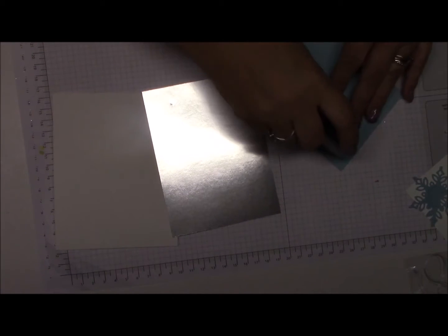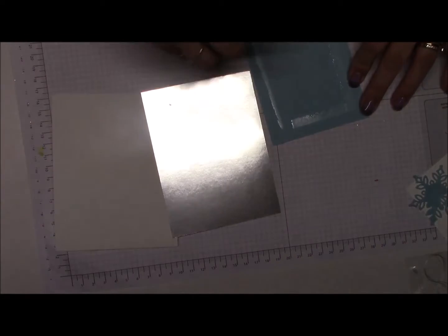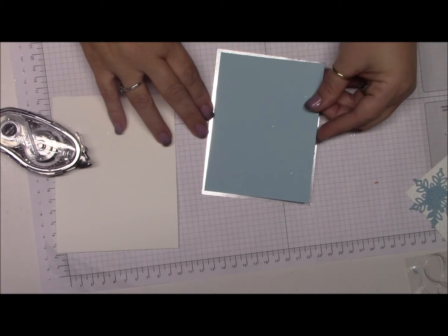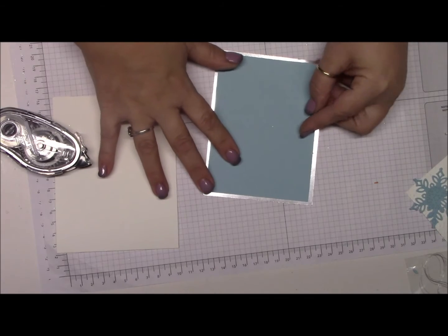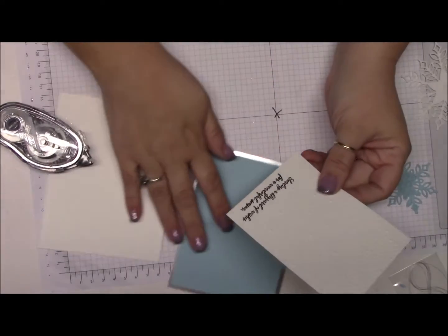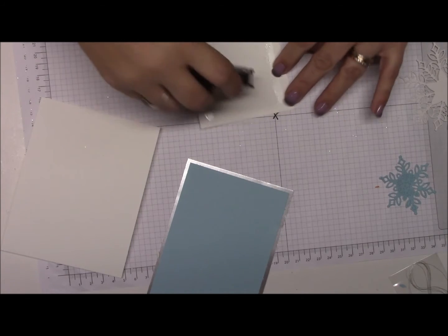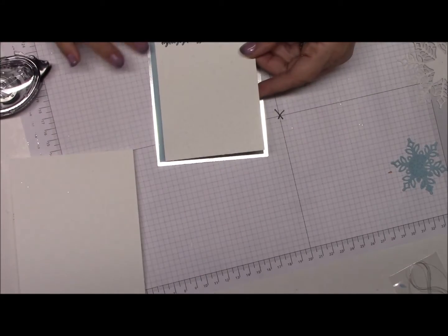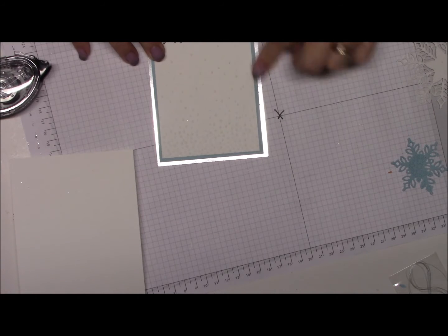So now I'm going to take the Balming Blue paper, and then we'll put this on here. And then we're going to take the Whisper White piece that we stamped, and we're going to put that on top of here, just like that.